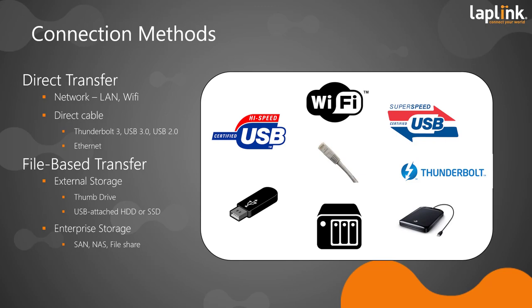More commonly used in enterprise environments is the file-based transfer — an asynchronous operation. First, we export the information we want to transfer from the original environment and save it into a so-called moving van or transfer file, stored on external storage such as a file share or USB drive. The second half of the process is to import that information into the new environment from that intermediary file. PCMover does not need to be running on both machines at the same time, which makes the file-based transfer very amenable to automation.